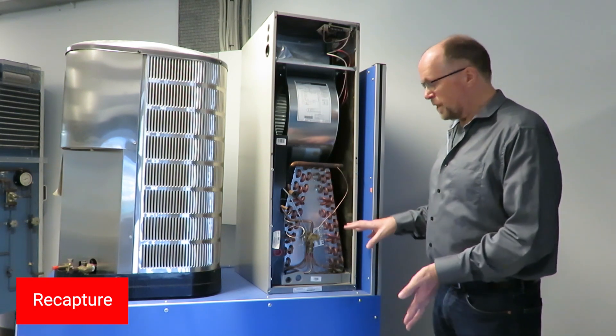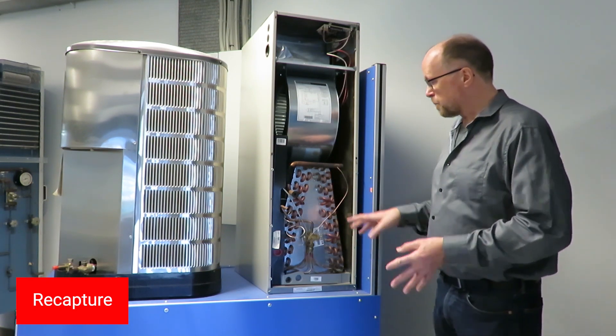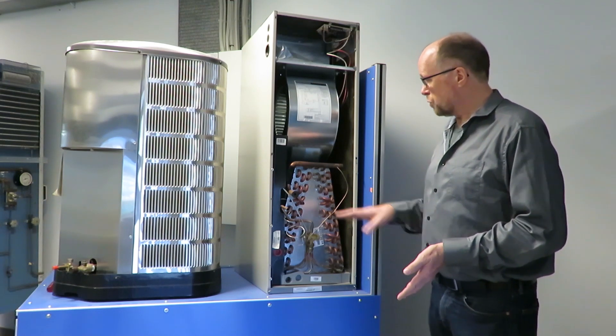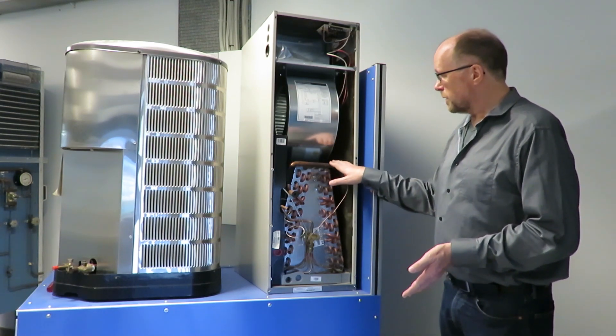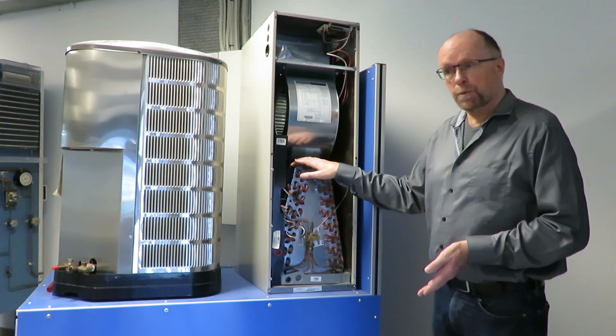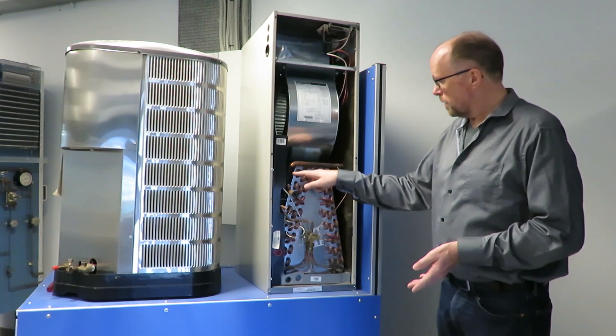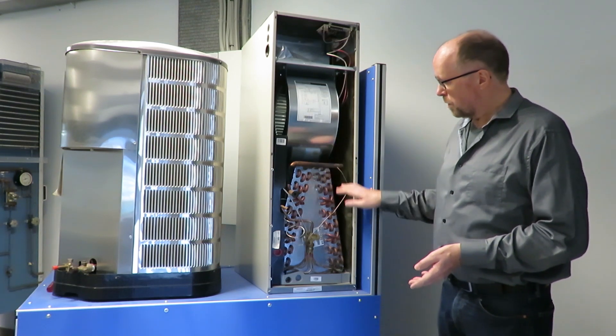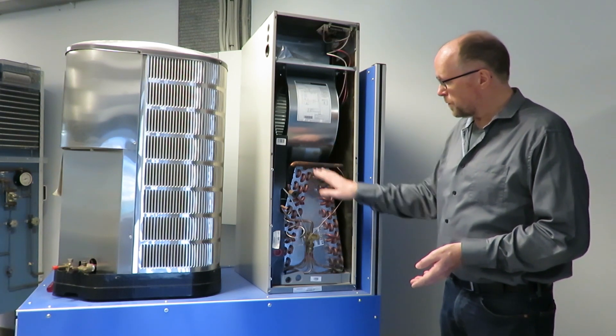The purpose of these connections is that the expansion valve is capable to see the signal or the temperature of the refrigerant that comes out of the evaporator by the bulb here. By this tube it can see the pressure of the refrigerant that comes out here.